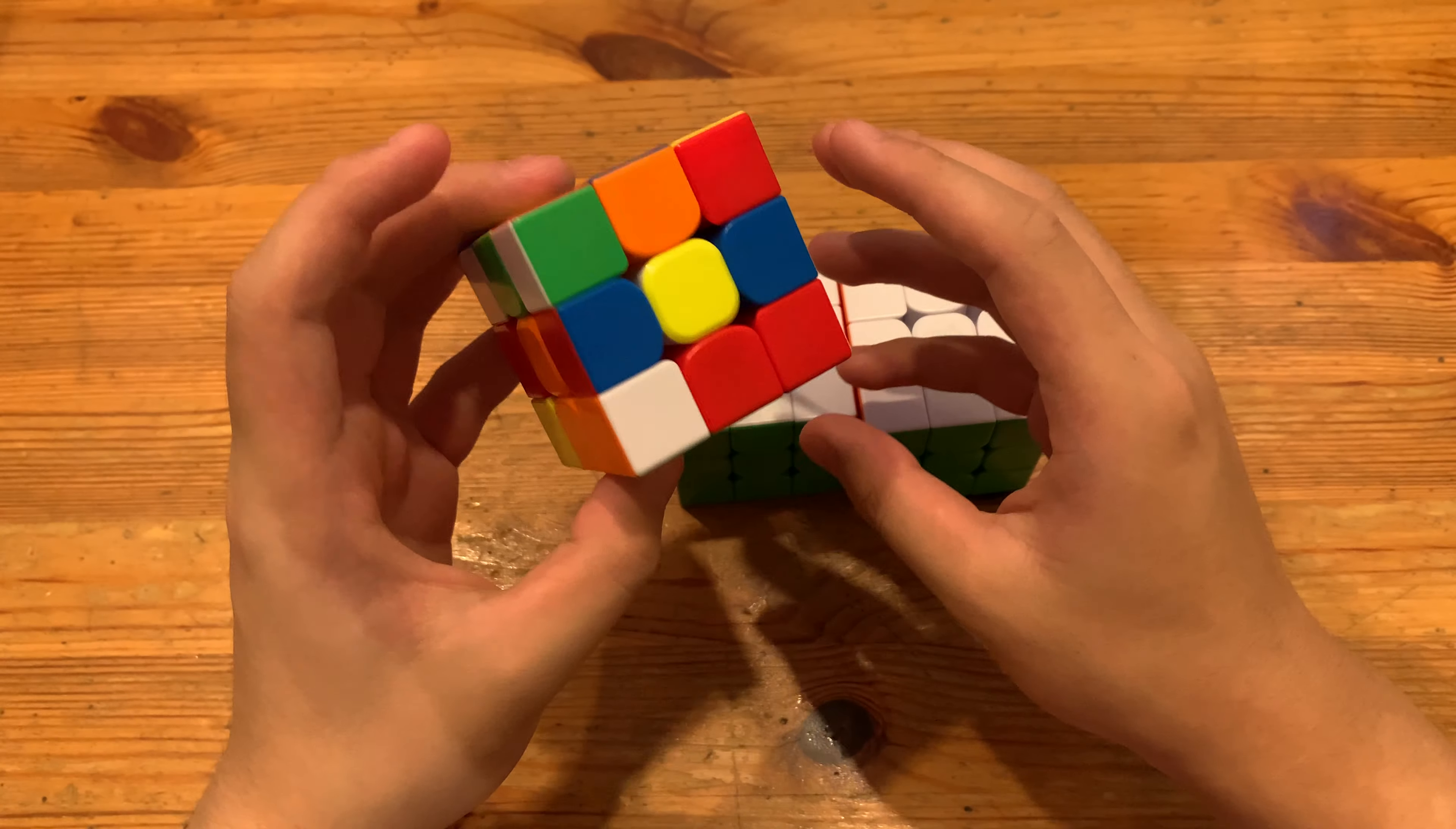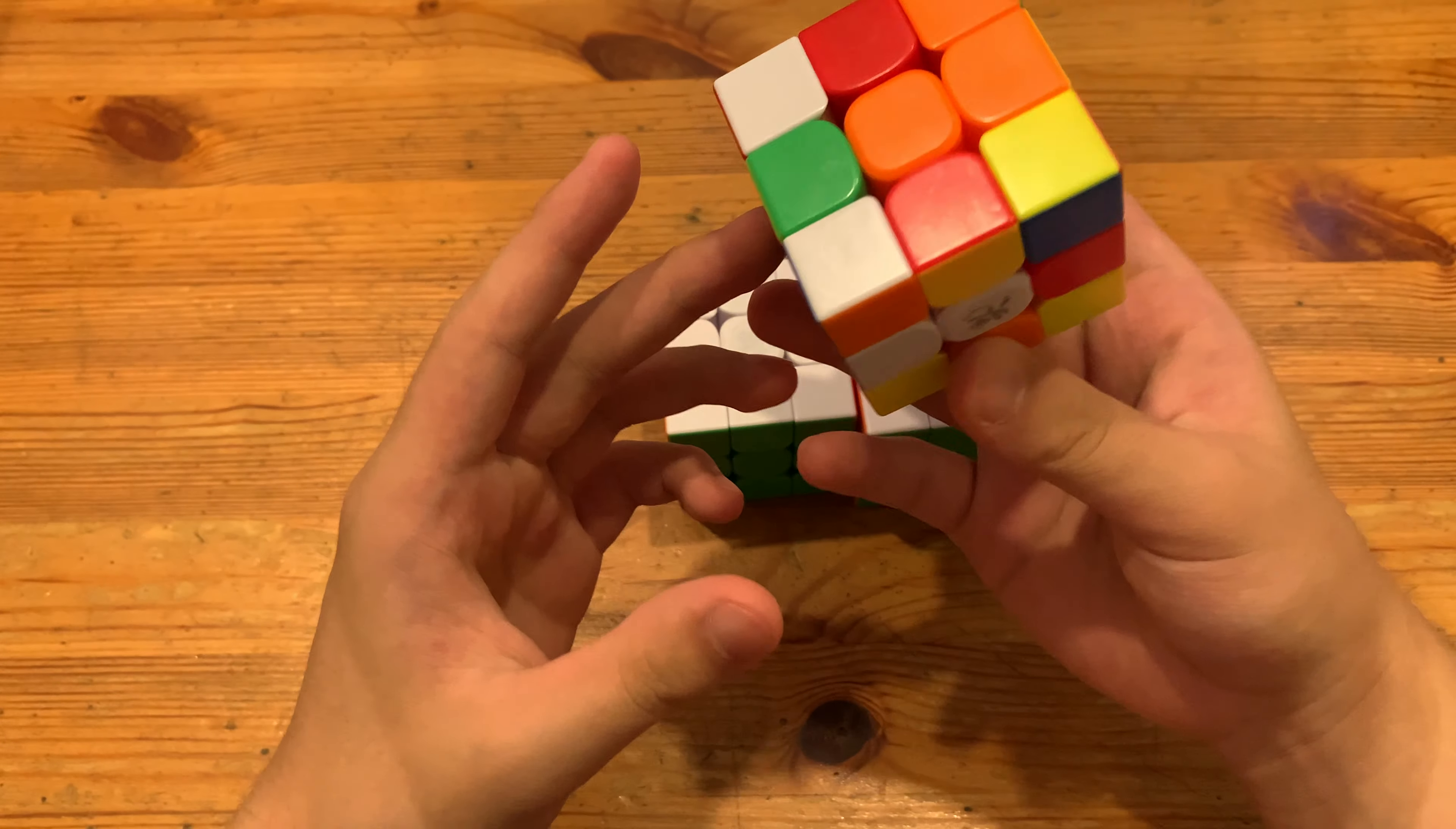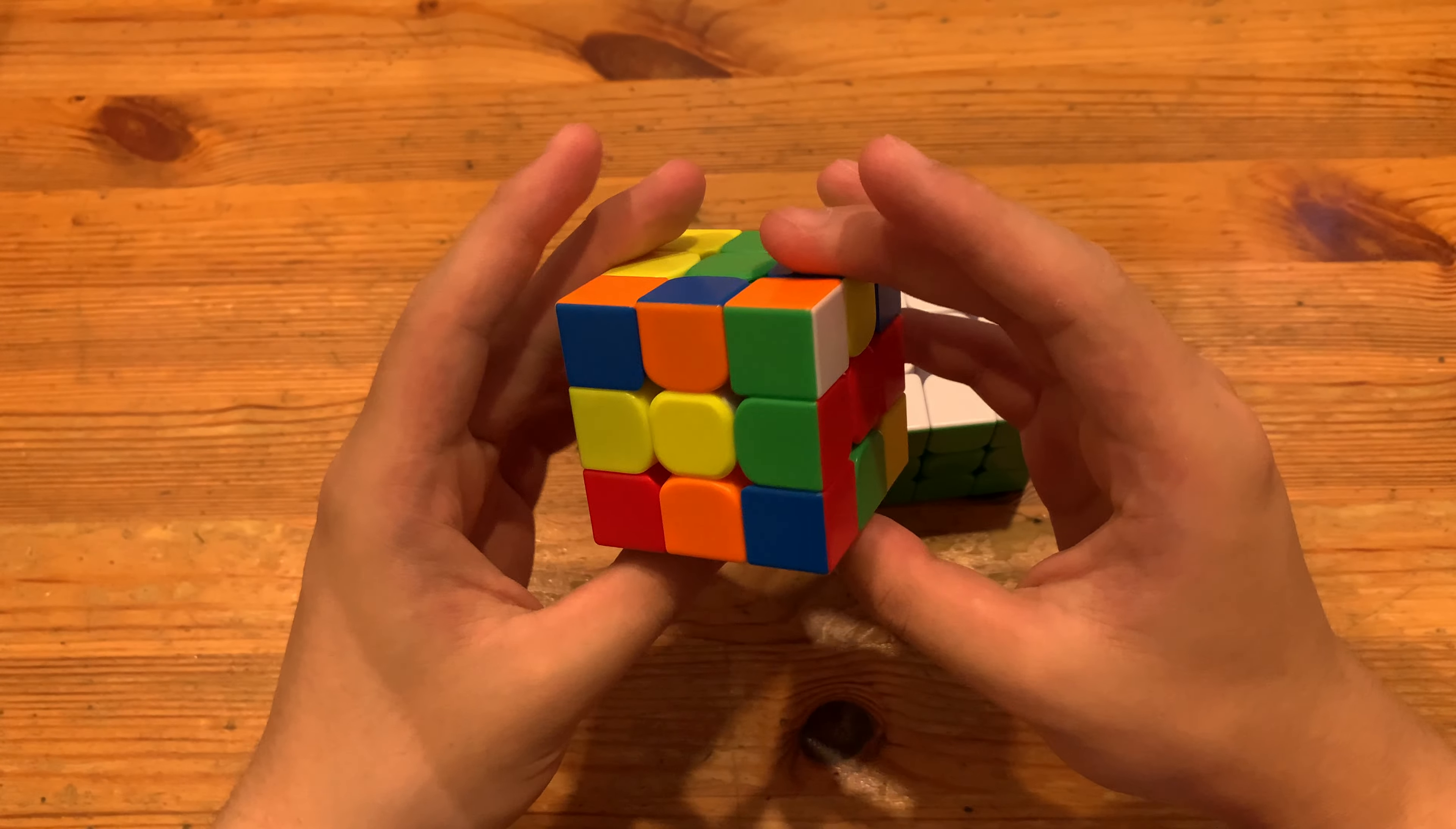So scramble number one. This actually looks like a very good scramble. There's a lot of pairs that can work very well. So I'll likely just choose to do back right. What I'll do is F to insert this cross edge, R to insert this cross edge, and L to insert this cross edge. And then D2 to align the cross.